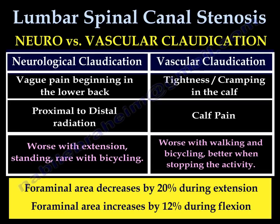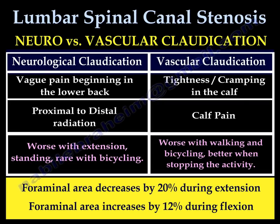Why is that? Because when you do extension of the spine, it narrows the foramen by 20% — it reduces the space available for the foramen by 20%. When you do flexion, you improve the size of the foramen by 12%. That is why flexion is good for neurological claudication.